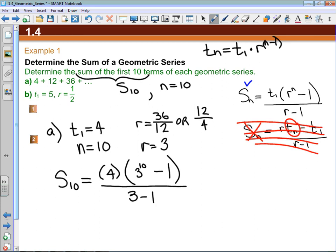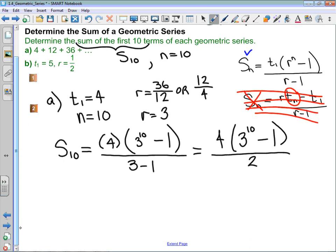I like to clean this up a little bit. This equals 4 times 3 to the power of 10, which I'm not going to try to do in my head, minus 1, divided by 2. I can do that 4 divided by 2 first to make life easier. So the sum of these 10 terms is 2 times 3 to the power of 10 minus 1.